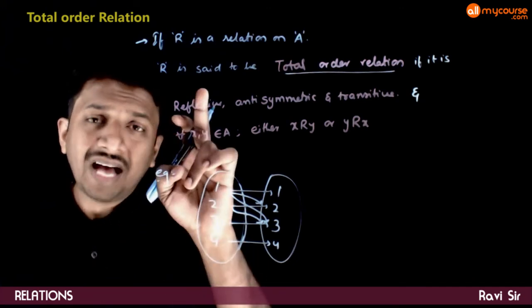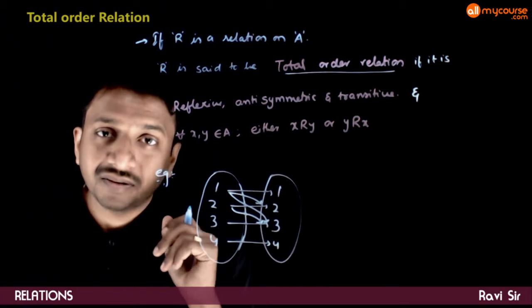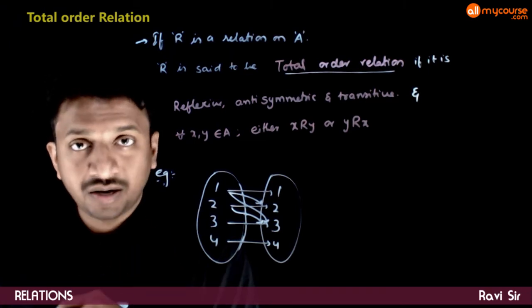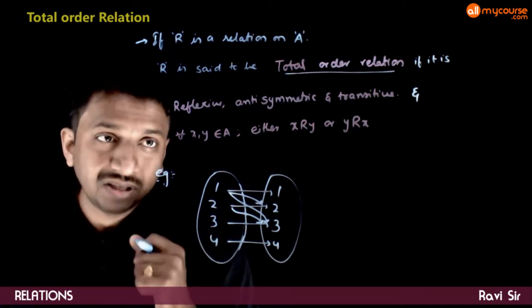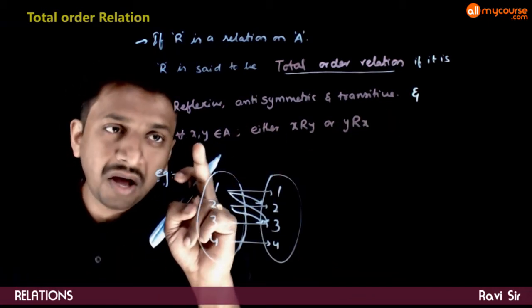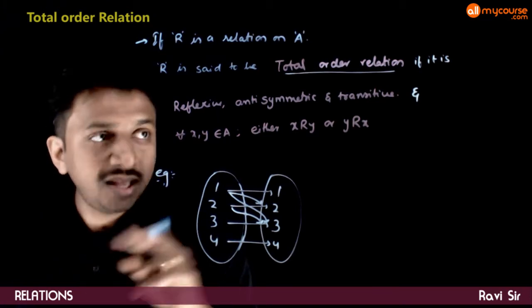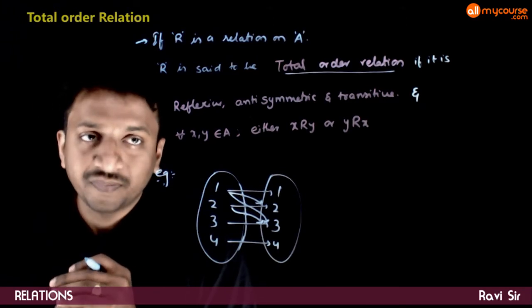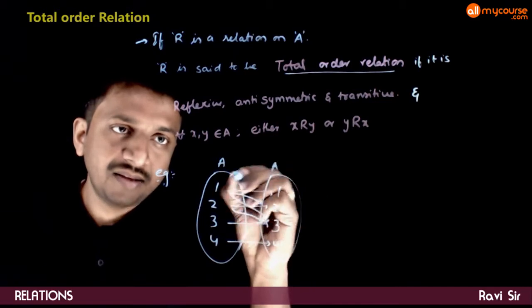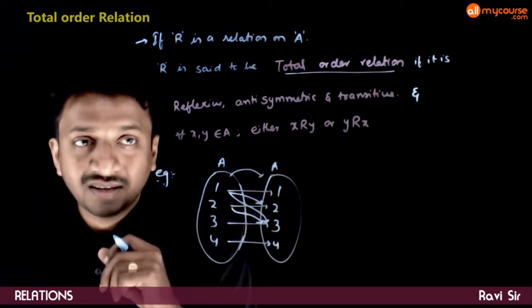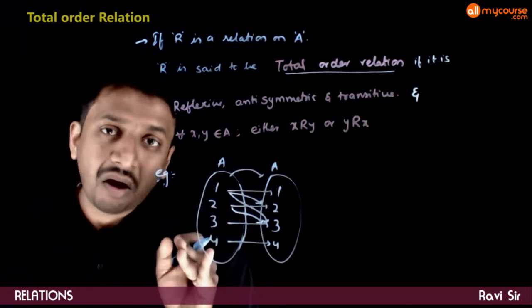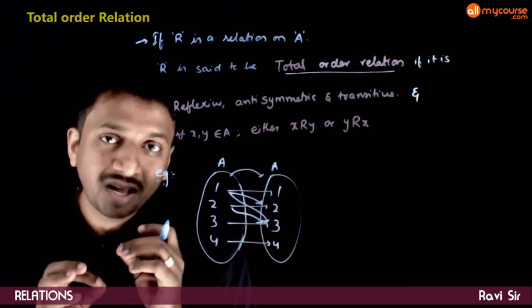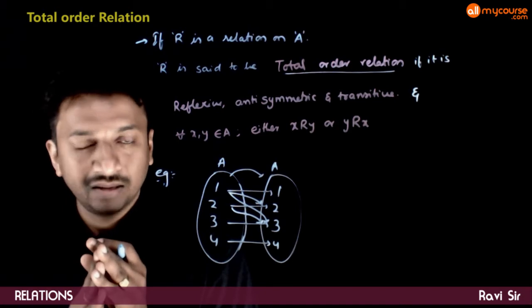Lastly, a relation R is said to be a total order relation if it is reflexive, anti-symmetric, and transitive. That is, the relation has to be a partial order relation and there is an extra condition. The extra condition is that for all x, y which belong to the set A, either x has to be related to y or y has to be related to x. If this condition is also valid, then it is called a total order relation.